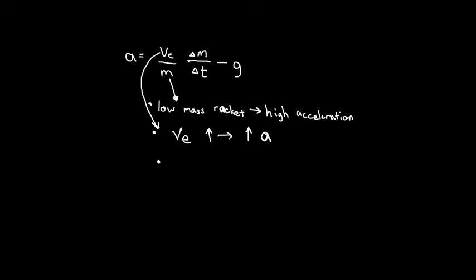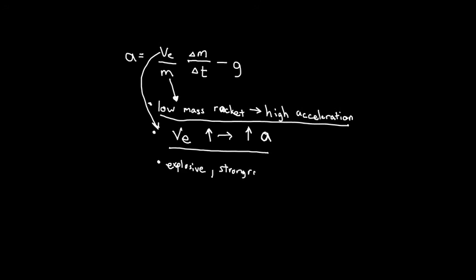The two key points: a high ve leads to high acceleration, and a low mass rocket leads to high acceleration. The challenge in rocketry is that achieving a high ve is very tough — the gas must be expelled very quickly, requiring very explosive reactions, which makes rockets somewhat dangerous. It's also very tough to build a strong rocket with low mass, because building structural strength requires a lot of material. Engineers need new kinds of materials to solve this problem — and that, in a nutshell, is momentum.